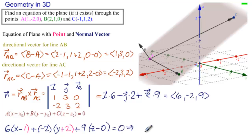So what do we have here? We have 6X minus 2Y plus 9Z equals minus 6 minus 4 is minus 10, so 10 on that side. And this is the answer to the problem.